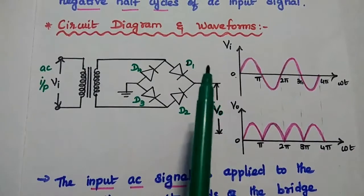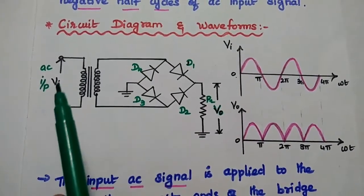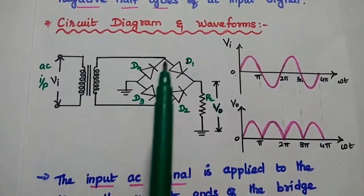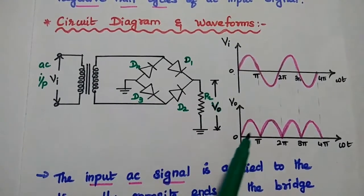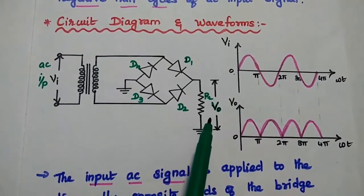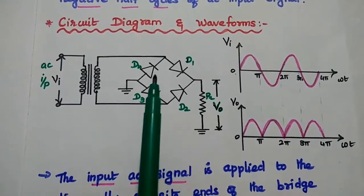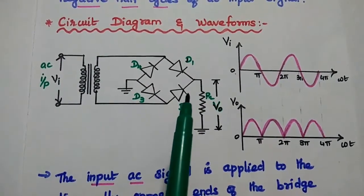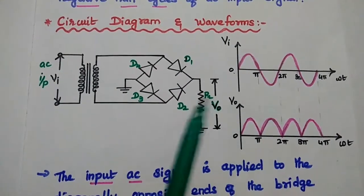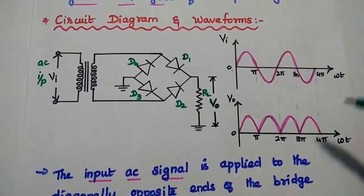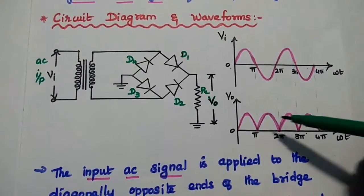By this bridge circuit, we can get the full wave rectified output signal. During the positive input signal, D1 and D3 are forward biased, and we can get the output signal across RL. During the negative half cycle, D2 and D4 are both forward biased, and we get the output across RL. So here we have the input AC signal and we get the rectified output signal for the full cycles.